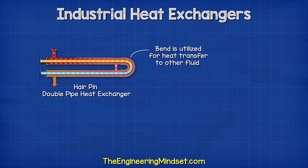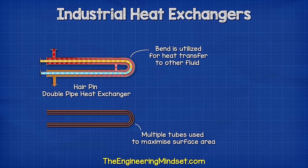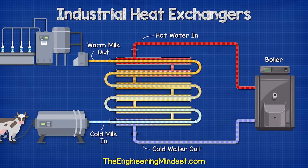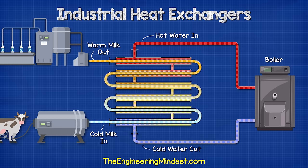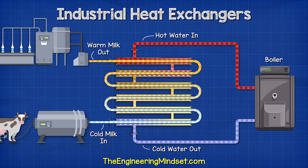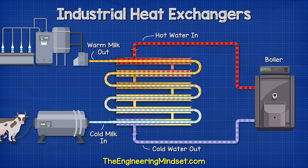Other designs, like the hairpin type heat exchanger often found in oil refineries, encapsulate the bend to fully utilise the surface area for heat transfer. This version normally uses multiple tubes to maximise surface area and increase heat transfer, although it also increases resistance. These are a fairly simple design and very common in food processing as well as pharmaceutical production. For example, a dairy product might flow through the tube, while hot water or steam flows in the opposite direction through the shell, warming the product to a certain temperature before it is mixed with other ingredients and bottled.